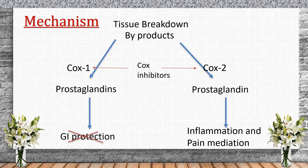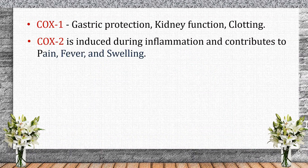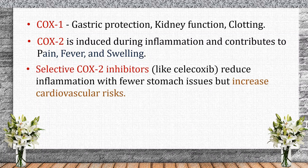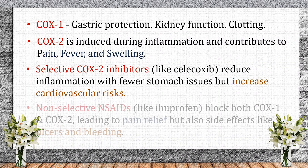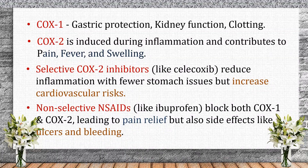However, COX-1 inhibition also affects stomach protection and kidney function, leading to potential side effects. Selective COX-2 inhibitors, like celecoxib, reduce inflammation with fewer stomach issues but increase cardiovascular risks. Non-selective NSAIDs, like ibuprofen, block both COX-1 and COX-2, leading to pain relief but also side effects like ulcers and bleeding.